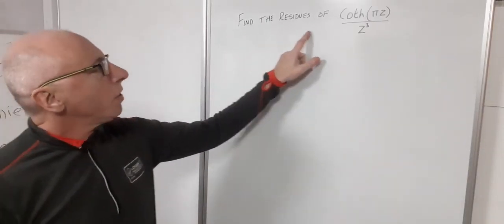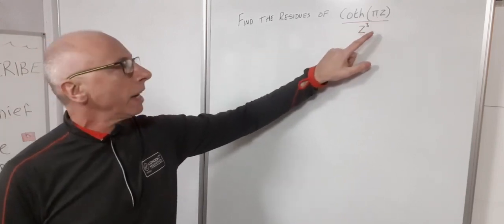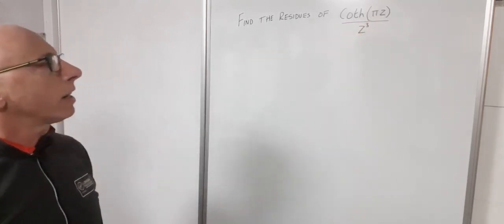Okay, so I've got a question here. We want to find the residues of the hyperbolic cotangent function with input pi z divided by z cubed.